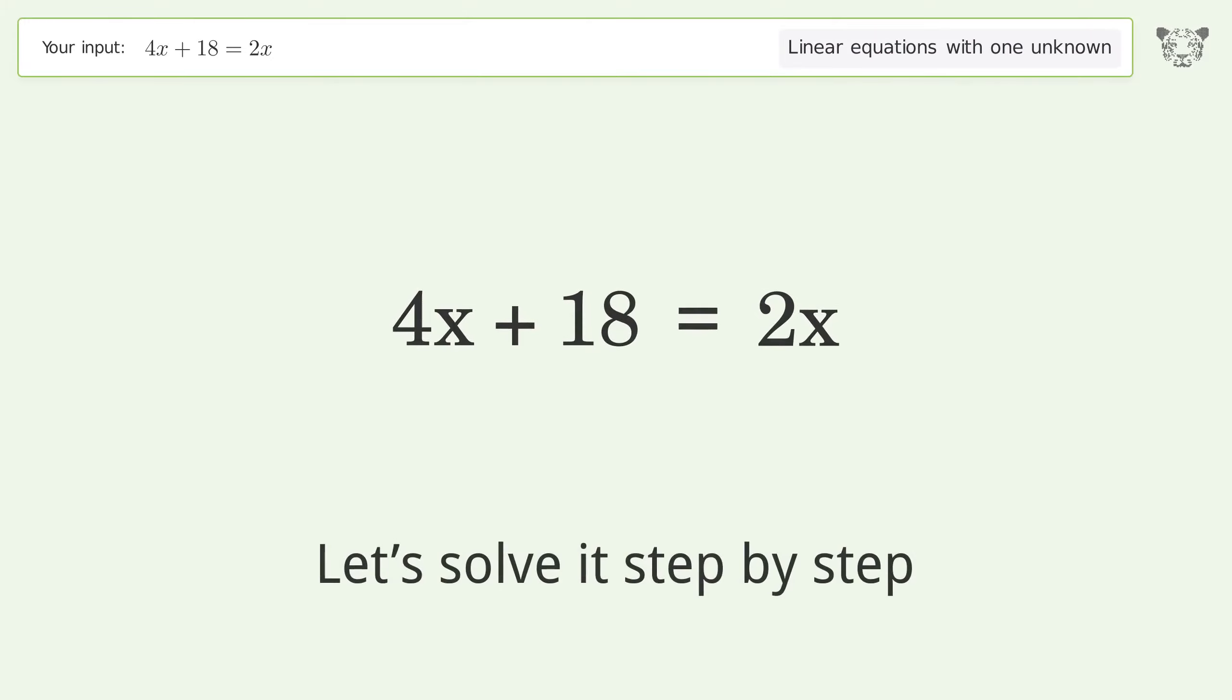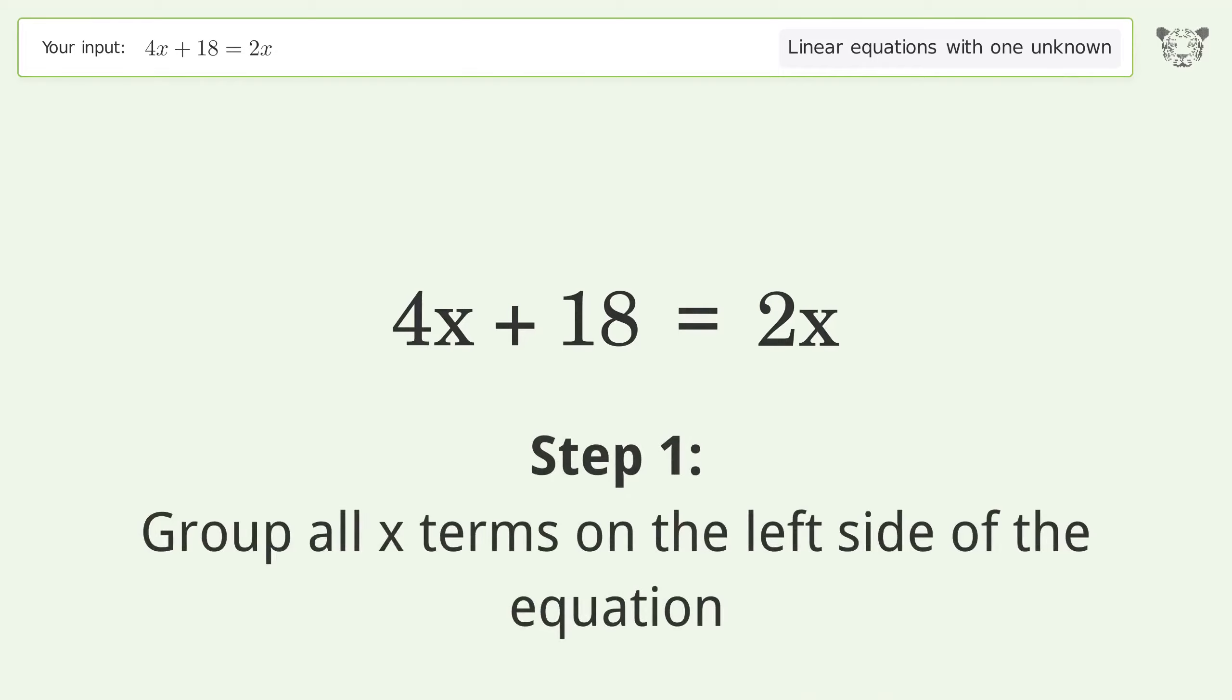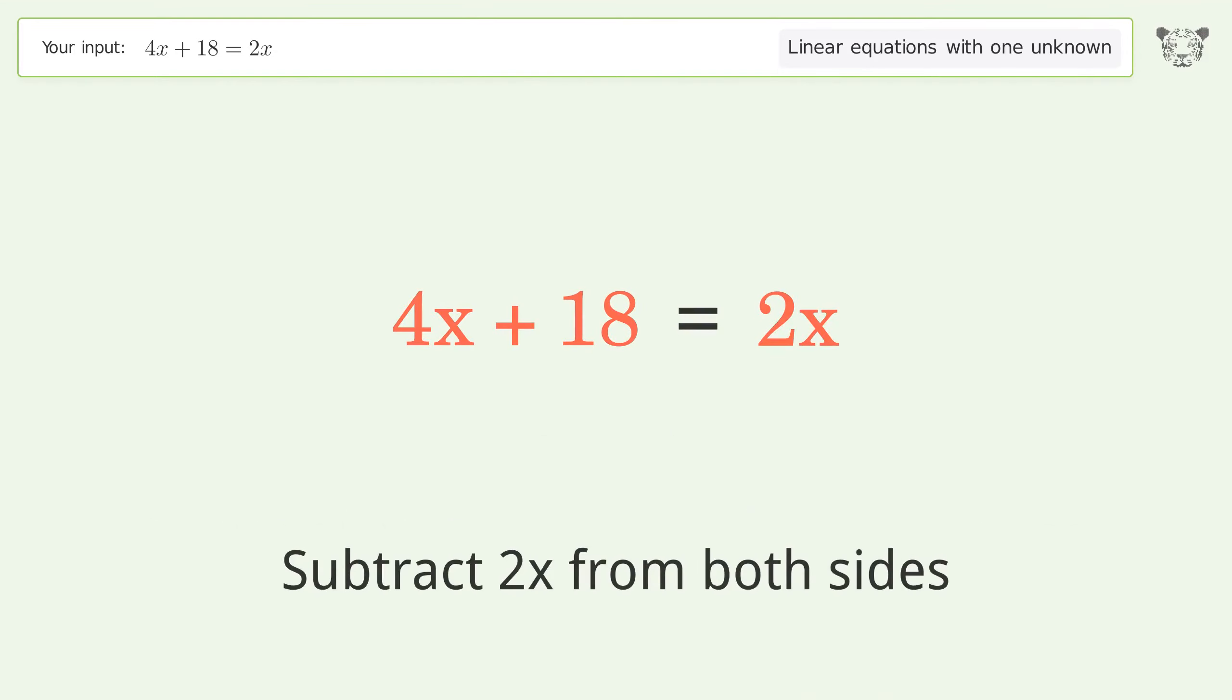Let's solve it step by step. Group all x terms on the left side of the equation. Subtract 2x from both sides.